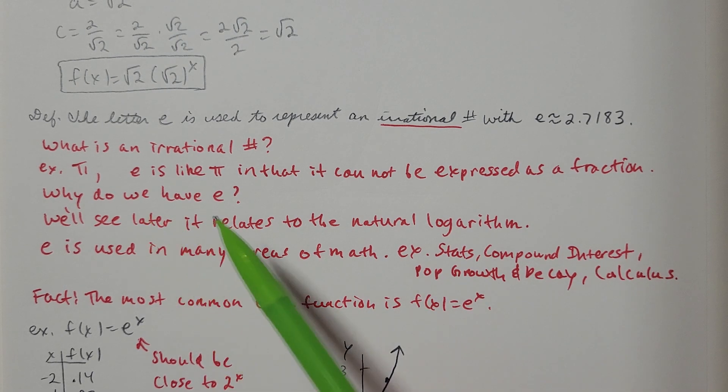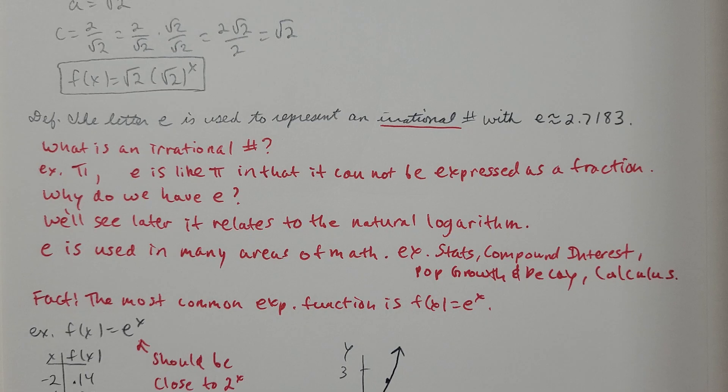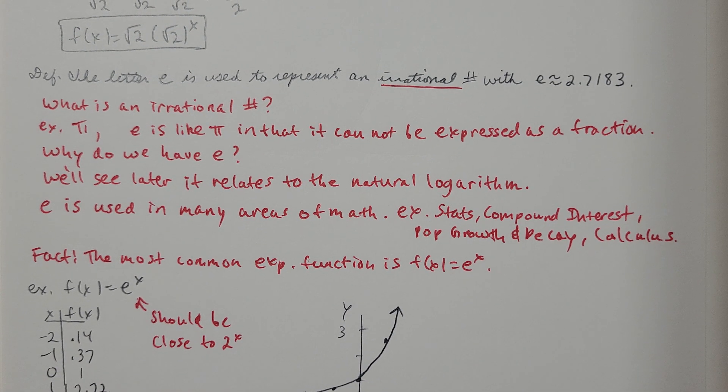Why do we have the number e? Well, we're going to see later how it relates to what's called the natural logarithm. E is the base of what's called the natural logarithm. The number e is used in several areas of math. So for example, statistics, compound interest. When I look at how much interest I have over time, like from investing money, that can involve the number e in it. Population growth and decay models. So if I'm studying how a population is growing over time or getting smaller over time, that will usually involve the number e. Calculus is all over the place in calculus. E, in my opinion, is arguably more important than the number pi just because of how often we see this number come up in various formulas.